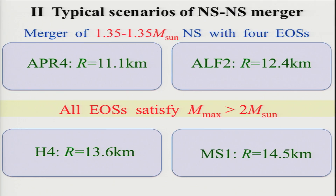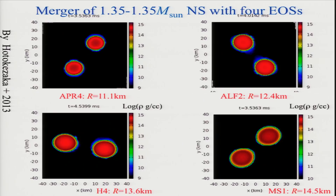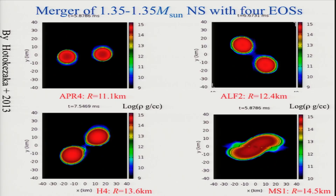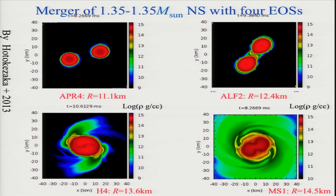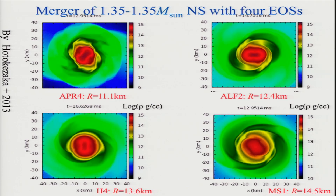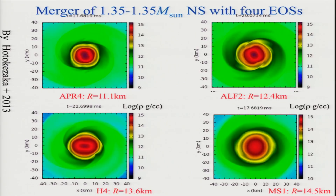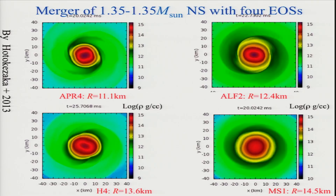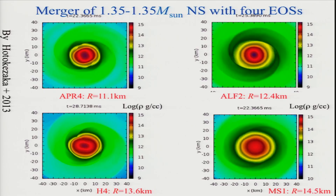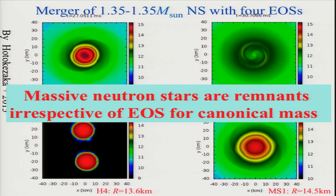This shows density in the equatorial plane. The conclusion is very simple: after the merger of a neutron star, the merger remnant doesn't collapse to a black hole soon, irrespective of the equation of state. For all cases, neutron stars are formed. Of course, for some equations of state, eventually a black hole could be formed — for example, after significant transport of angular momentum. But it takes time. The important message from the animation is that a typical remnant after the merger of a binary neutron star is a massive neutron star, irrespective of the EOS for canonical masses.